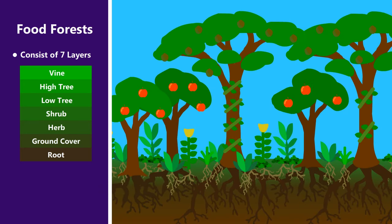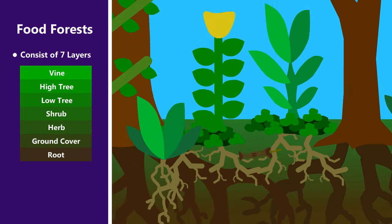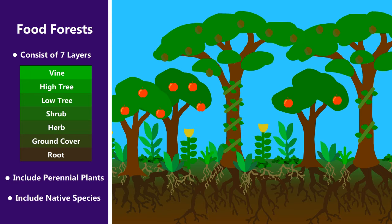Every one of these layers either produces some sort of food or medicine, or is in some way helpful to the system as a whole. The plants are mostly perennials and include as many native species as possible.